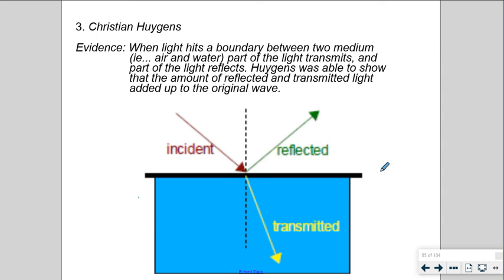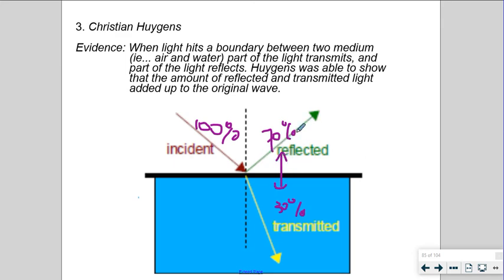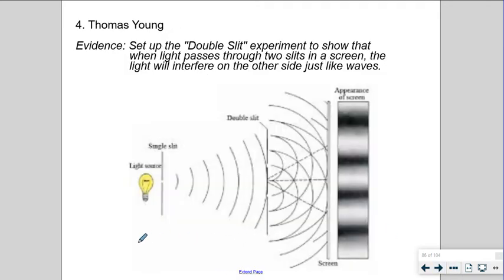Christian Huygens proved that if 100% of light comes in and 30% is transmitted through refraction, the remaining 70% is reflected — and these two amounts add up to the original, linking particle-like reflection and wave-like refraction behavior. Finally, Thomas Young's double slit experiment in 1800 helped solidify the idea that light was a wave.